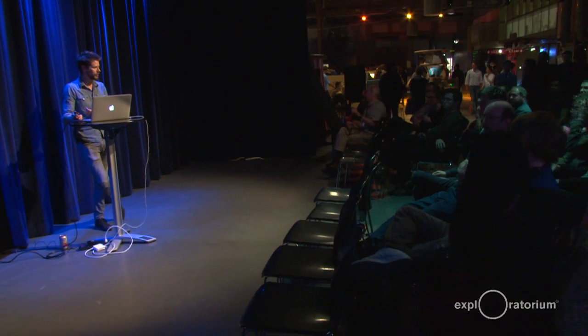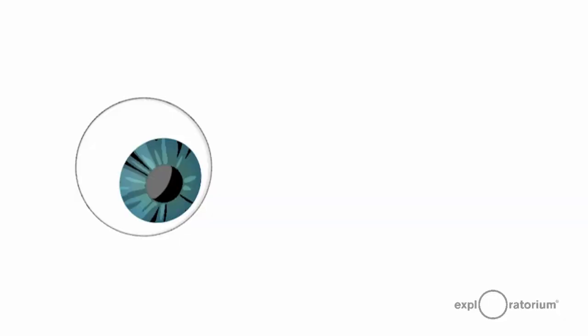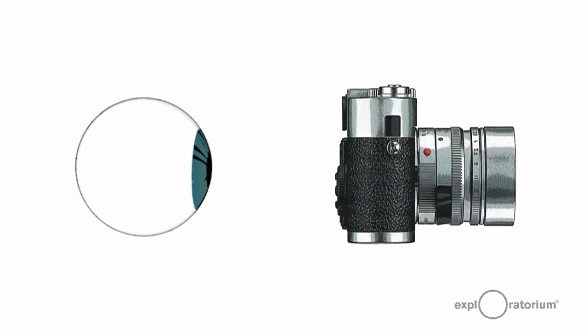This talk is called Cameras and the Geometry of Vision. Starting with the eyeball, there's an analogy between the eye and the camera that's quite explicit. Both have a lens and an aperture at the front, a gap across which light gets focused, and a light-sensitive surface in the back.